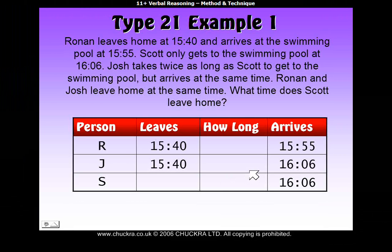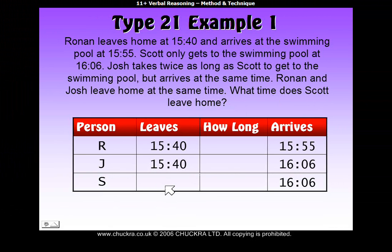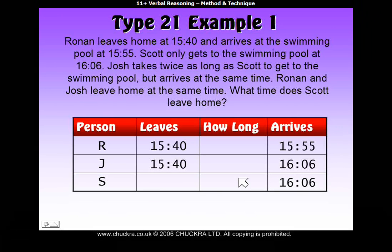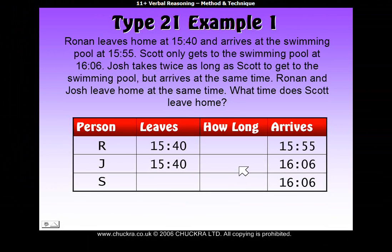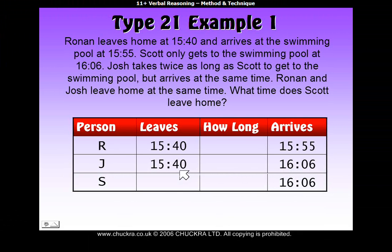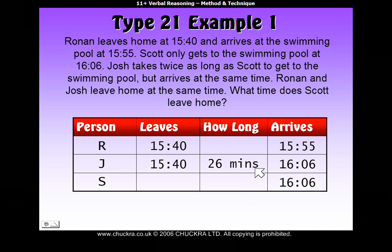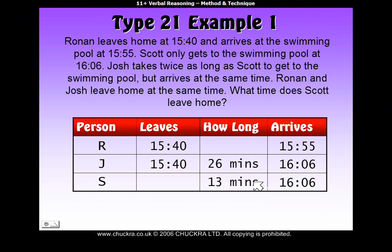We look at what we've been asked: what time does Scott leave home? To find this, we need to know how long he takes. The only information we have is that Josh takes twice as long as Scott, so if we can work out how long Josh takes, it will help us find how long Scott takes. We know Josh leaves at 15:40 and arrives at 16:06, so he takes 26 minutes, which is twice as long as Scott. Therefore, Scott must take half of 26 minutes — so Scott takes only 13 minutes to get there.